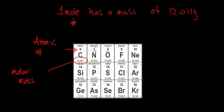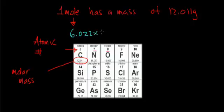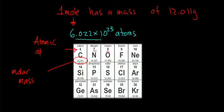What is a mole? A mole is just a unit that we use to count large numbers or large quantities of things. One mole represents 6.022 times 10 to the 23 atoms. So what this is really telling us is that one mole of atoms — this many atoms of carbon — has a mass of 12.011 grams.